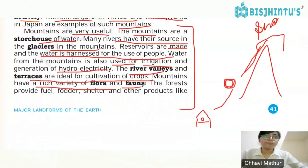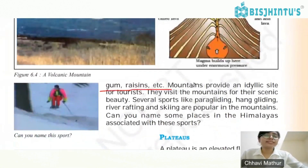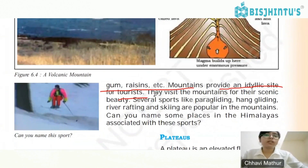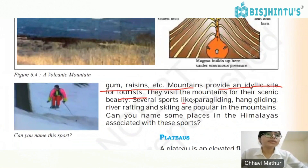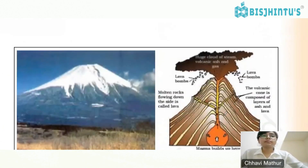River valleys and terraces are ideal for cultivation of crops. Mountains have a rich variety of flora and fauna, and forests provide fuel, food, shelter, and other products like gum and resin. Mountains also provide idyllic sites for tourism, and sports like paragliding, hang gliding, river rafting, and skiing are popular in mountainous areas.